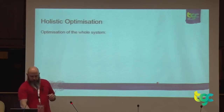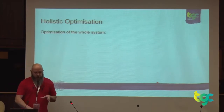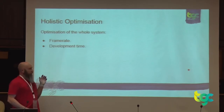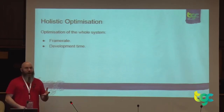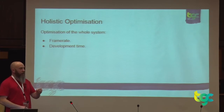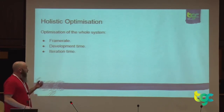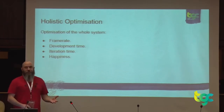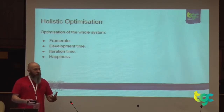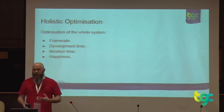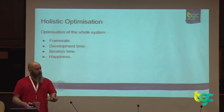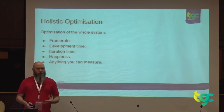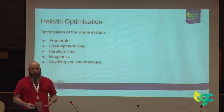Holistic optimisation is the optimisation of the entire system. We're looking at frame rate, development time — an important part of developing a game. If we can optimise that, we stand to make more money. Iteration time — how quickly can we change content within the game? Happiness — we should be optimising for happiness for our developers. Anything that you can measure can be optimised, so the more things we can measure, the more we can optimise.